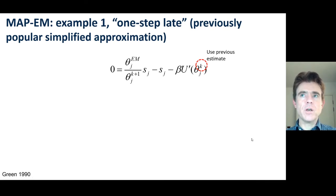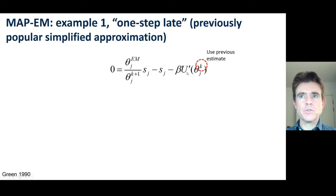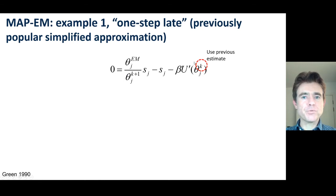We'll first look at the one-step-late method proposed by Green in 1990. It uses an approximation because the partial derivative of the energy with respect to theta_{k+1} is very difficult to find — theta_{k+1} is what we actually want and already appears in the equation.